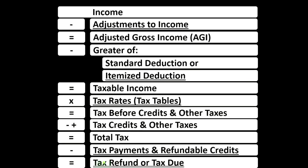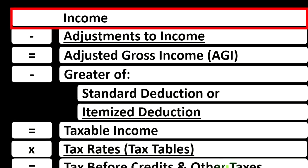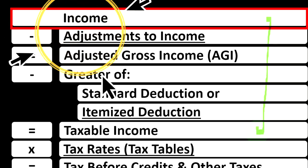Looking at the income tax formula, we're focused on Line 1, Income. In the first half of the income tax formula is, in essence, an income statement — but just an outline, a scaffolding — with other forms and schedules flowing into each of these line items.